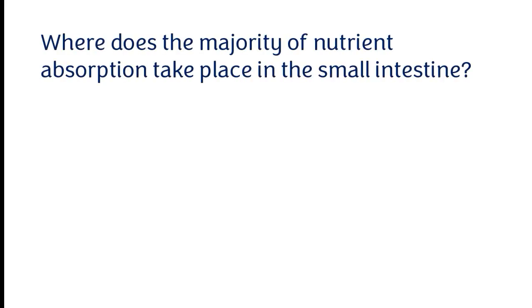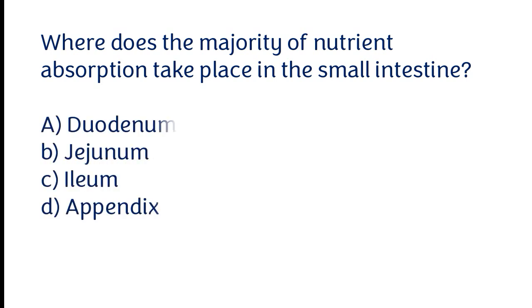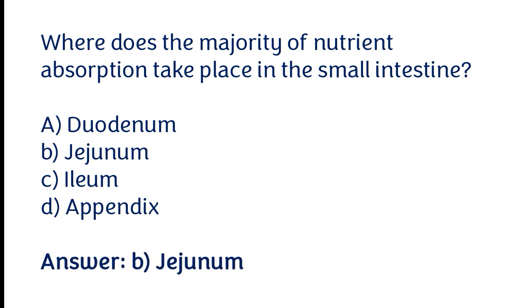Where does the majority of nutrient absorption take place in the small intestine? Options: a) Duodenum, b) Ileum, c) Jejunum. The correct answer is option B. The majority of nutrient absorption takes place in the duodenum part of the small intestine.